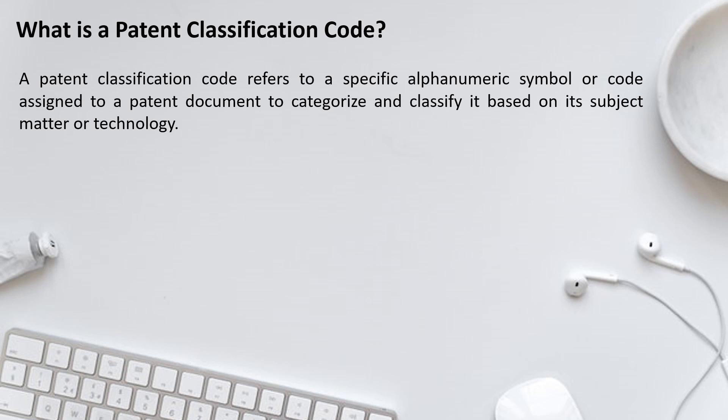Just as someone wanting to read a non-fiction book goes to the non-fiction section, or a comic reader goes to the comics section, a patent classification code works similarly. Every code has a set of patents from a specific field. For example, if one wants to find patent documents related to helmets, there is a specific classification code defined for helmets, and one can go to that code and read all patents related to helmets.